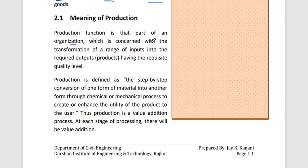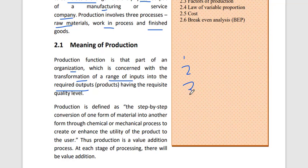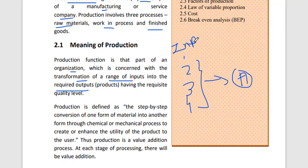The production function is that part of an organization which is concerned with the transformation of a range of inputs into the required output. We take four to five materials as input and convert them into one designated output — whether that is a cricket bat, mobile phone, tea, coffee, or laptop.